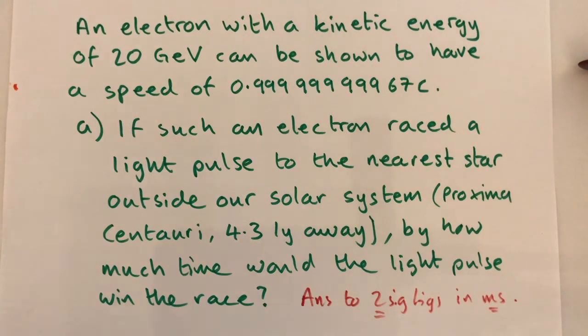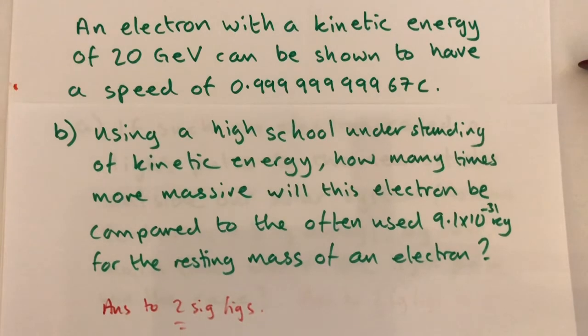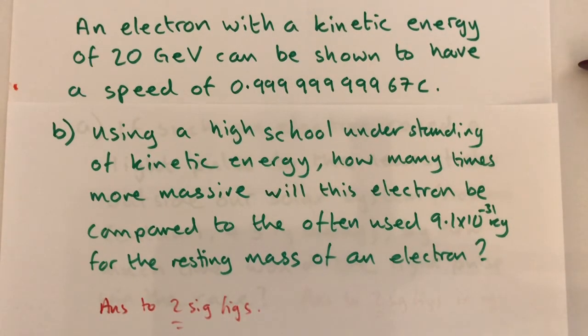Part b: using a high school understanding of kinetic energy, how many times more massive will this electron be compared to the often used 9.1 times 10 to the minus 31 kilograms for the resting mass of an electron? Please give your answer to two sig figs.